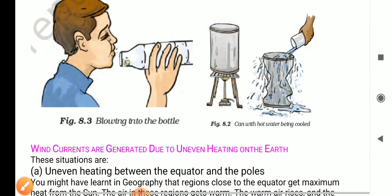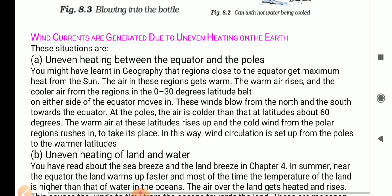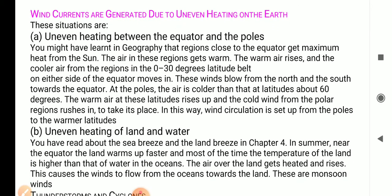Now, next point is wind currents are generated due to uneven heating on the earth. Uneven heating between the equator and the poles. You might have done in geography that regions close to equator get maximum heat from the sun. The air in this region gets warm. The warm air rises and the cooler air from the region in the 0 to 30 degree latitude belt on either side of the equator moves in. These winds blow from the north and the south towards the equator.